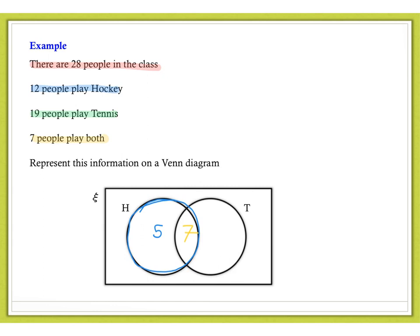19 people play tennis. So, the total of this circle must be 19, which means I need 12 here. There are 28 people in the class. If we add 5, 7 and 12 together, we get a total of 24, which means there must be 4 people outside the circles who do not play tennis or hockey.